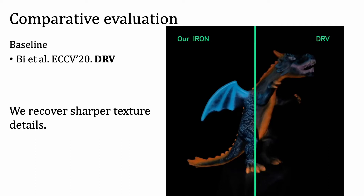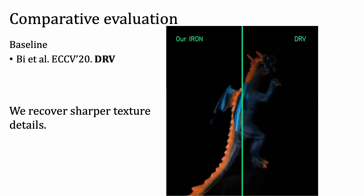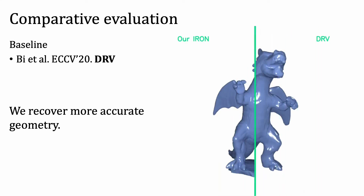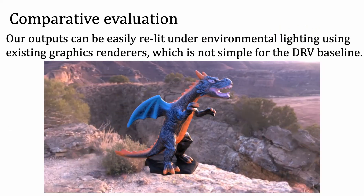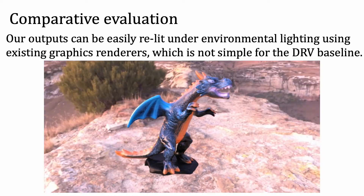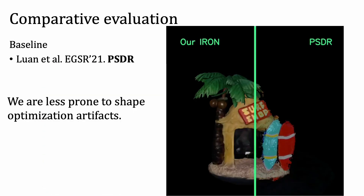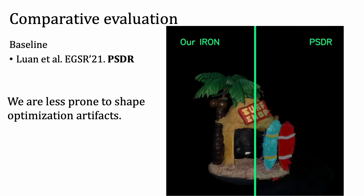Now let's look at some comparative evaluations. We first compare with the method utilizing volumetric scene representations, Deep Reflectance Volume, using the official implementation provided by the authors. Our method recovers much sharper details and more accurate geometry than this baseline. The meshes and textures output by our system can be easily relit under environmental lighting using existing graphics renderers, which is not the case with the volumetric representations output by the DRV baseline. We then compare with a mesh-based differentiable rendering pipeline called PSDR. Our results contain much fewer geometry artifacts, thanks to the neural SDF representation.